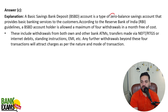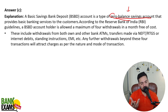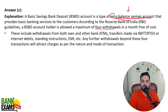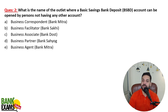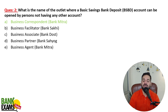BSBD is a type of zero balance saving bank account — very common at the time of interviews. It is a zero balance saving bank account with certain restrictions, designed to provide basic banking facilities. Maximum four withdrawals are allowed, including both from own and other bank ATM transfers. Up to four transactions are completely free; beyond four transactions, charges apply as per the nature and mode of transaction. A BSBD account can be opened through Bank Mitra or Business Correspondent outlets.